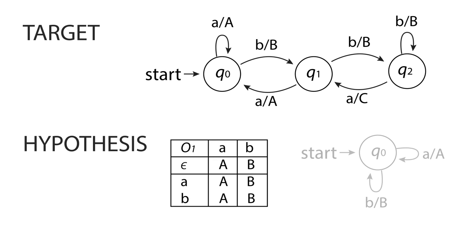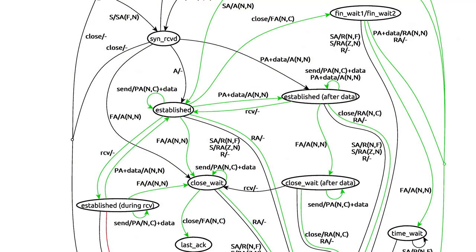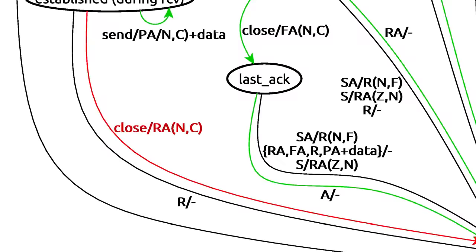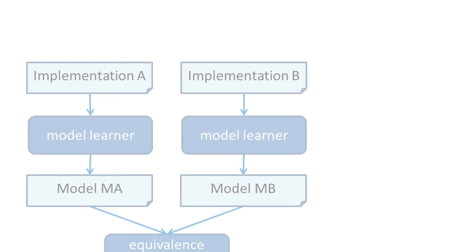By iterating these steps, model learning reveals the hidden logic within a system — and it's not always the logic its creator intended. For instance, in the case of the SSL protocol, they studied a whole range of implementations and discovered that the state machines of all these protocol implementations are different. In one implementation they actually discovered a serious issue, which meanwhile has been fixed — the implementation was changed due to their efforts.